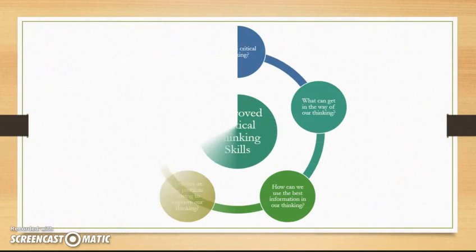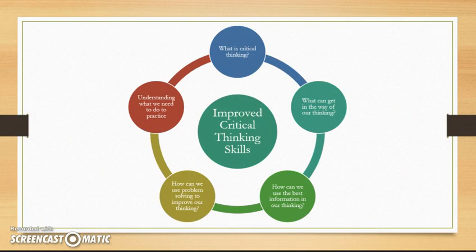First, I'm going to provide you with a visual of the course overview. In the center, you can see that the overall goal of the course is to become an improved critical thinker. Surrounding this concept are five elements. Each of these elements represents one of the weeks and topics for our course. We will look at each of them a bit more closely.